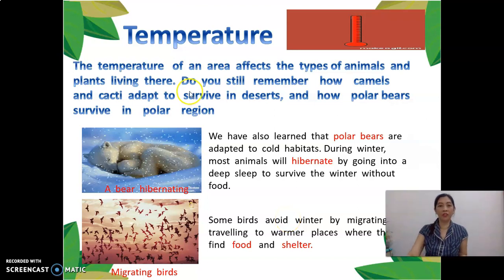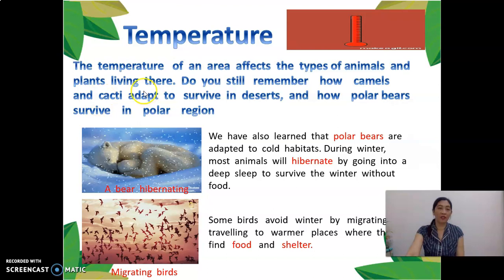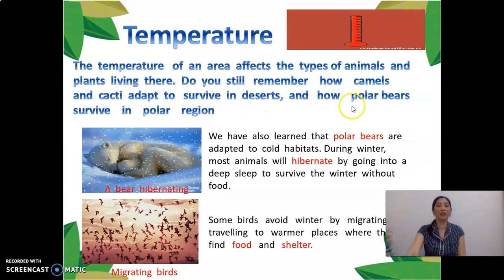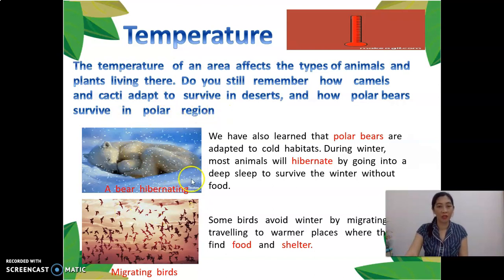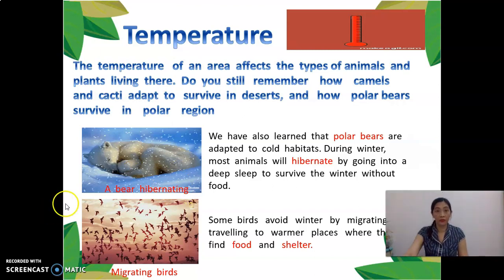One of the non-living components is temperature. The temperature of an area affects the types of animals and plants living there. Do you still remember how camels and cactus adapt to survive in the desert and how polar bears survive in polar regions? These animals are examples of how living things are affected by temperature.